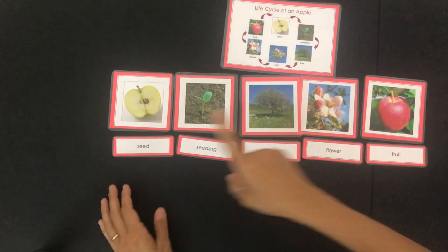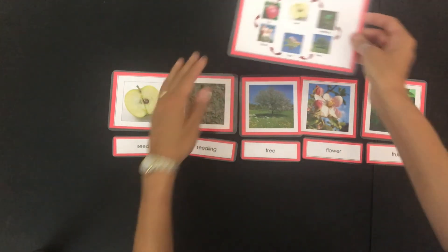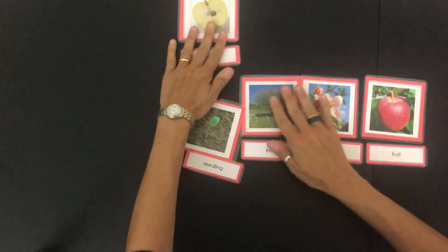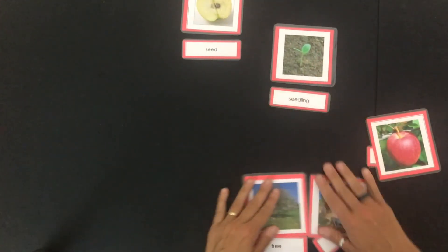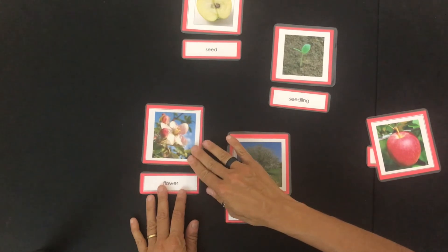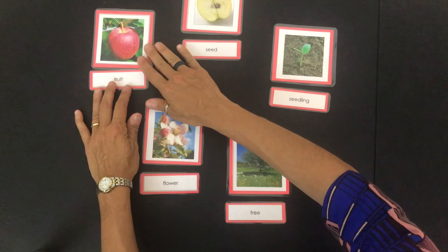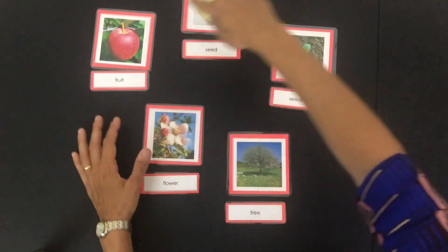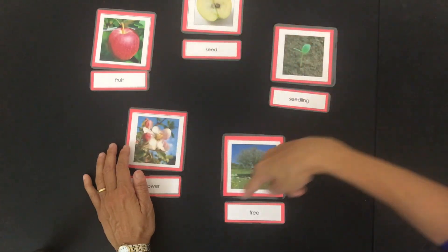Now you can either lay them out horizontally next to each other or you can make it a circle like a cycle — where you have the apple seed, then the seedling, then the tree, then the bud and flower, and finally the fruit, the apple. And then once you open up the apple you get the seeds and it starts all over again. We call it a cycle because it goes around and around and it starts over and over again.